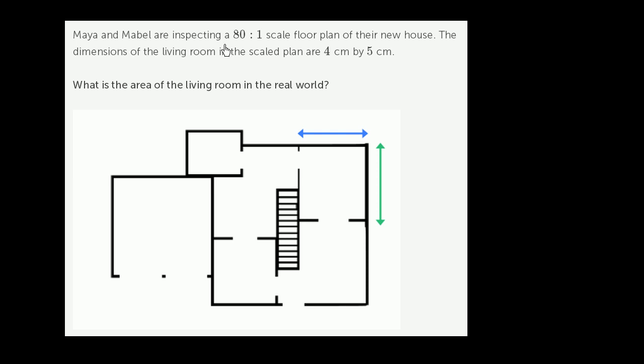Maya and Mabel are inspecting an 80 to 1 scale floor plan of their new house. The dimensions of the living room in the scaled plan are 4 centimeters by 5 centimeters right over here. What is the area of the living room in the real world? They gave us these dimensions right over here.